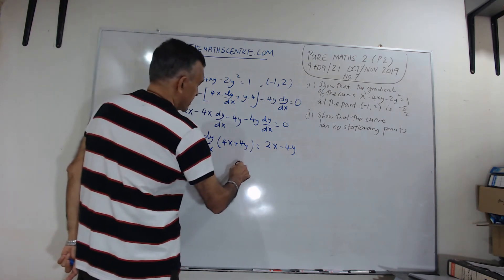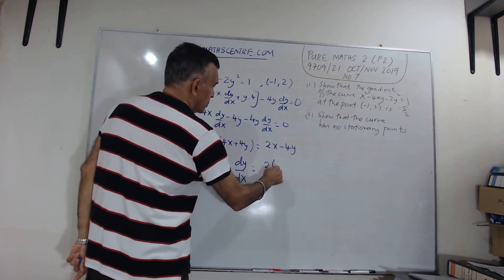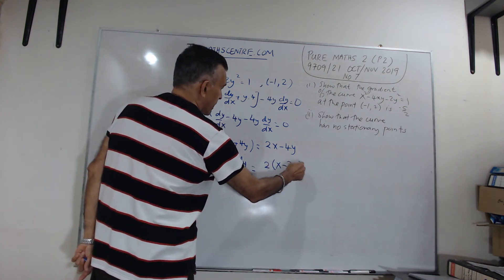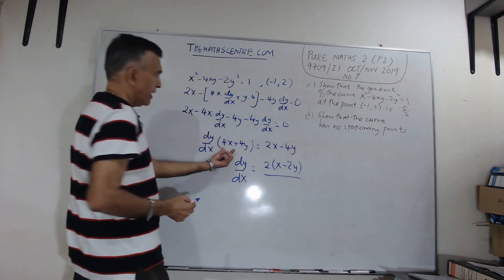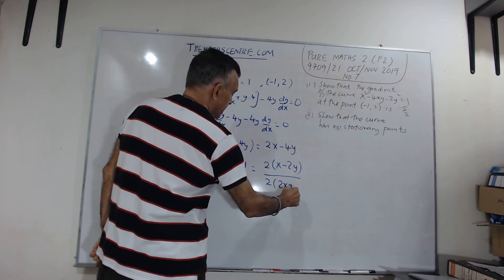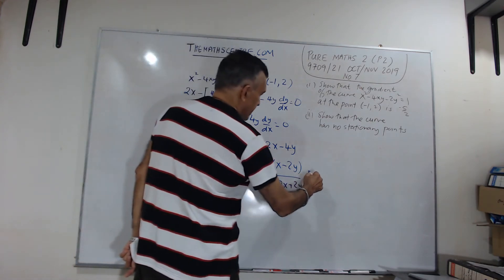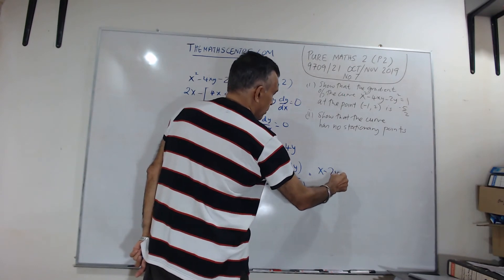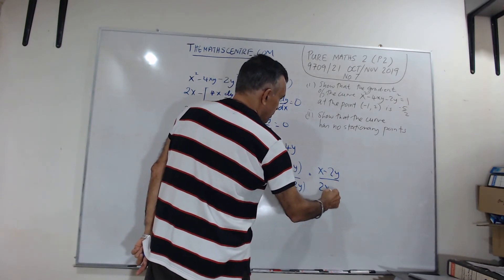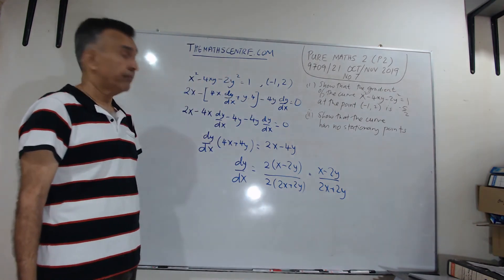So, now, I can write dy/dx equals to 2x - 2y over, I have 4x + 4y. Let me write it as 2, 2x + 2y. So, now, I can write this as x - 2y over 2x + 2y, canceling the 2s.